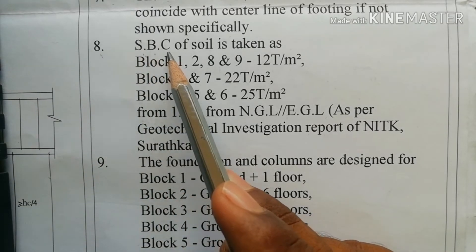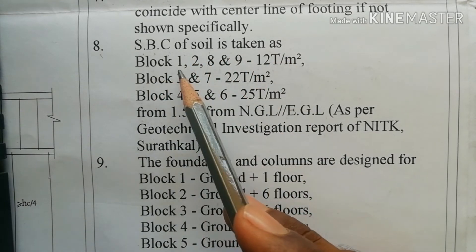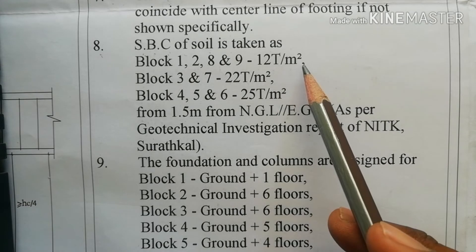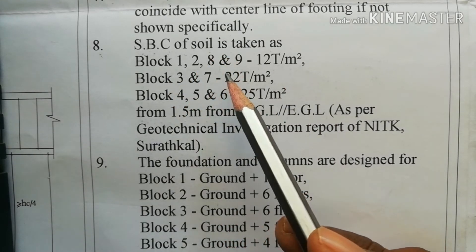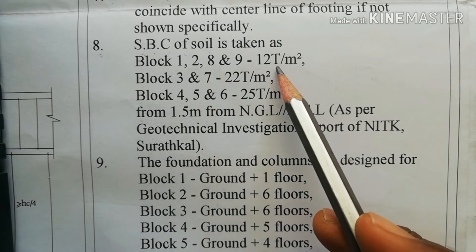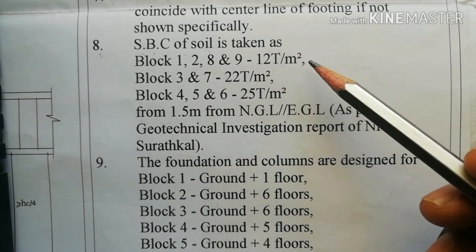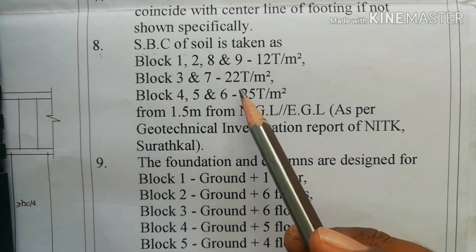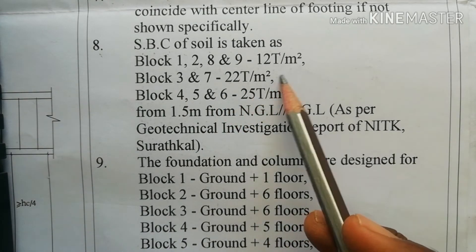Point 8: Safe bearing capacity of the soil. For Blocks 1, 2, 8, and 9, it is 12 tons per meter square. This is for a 7-storey building.